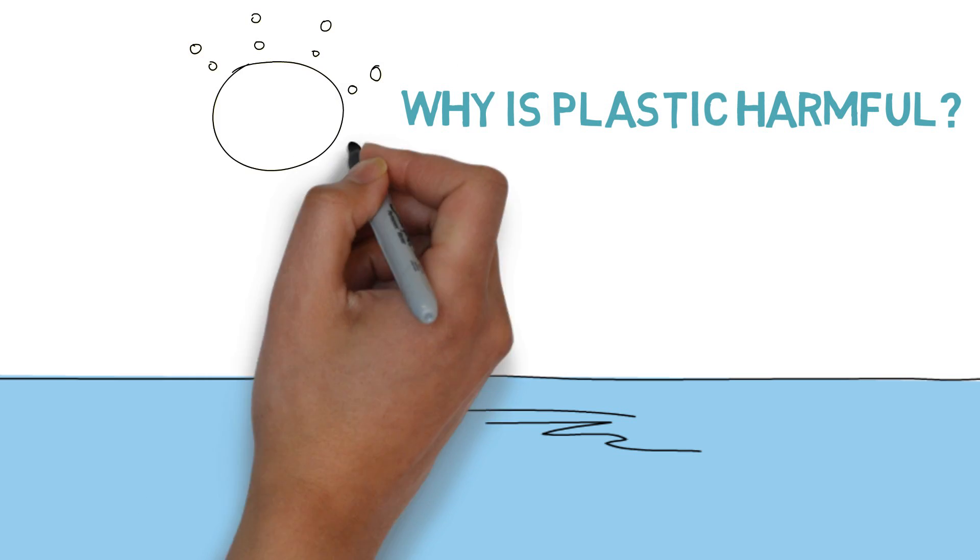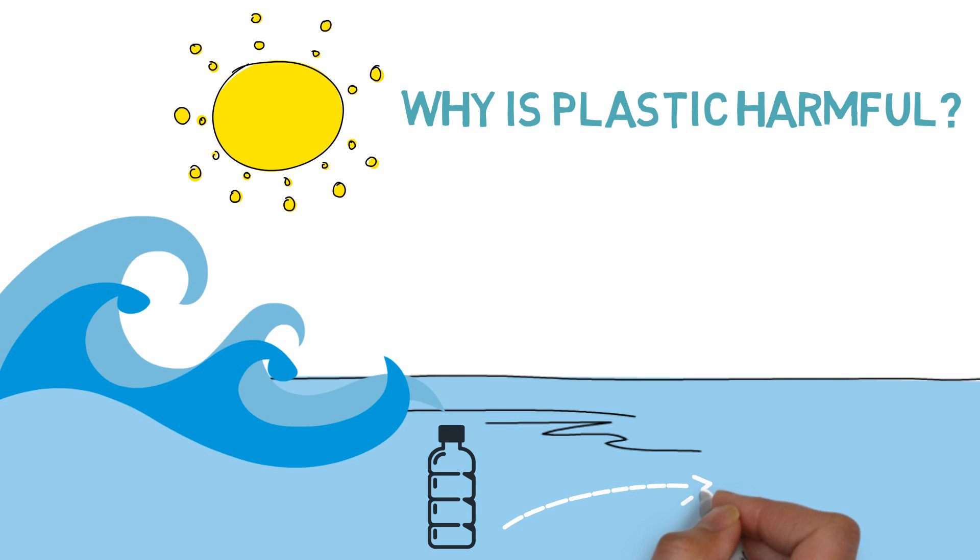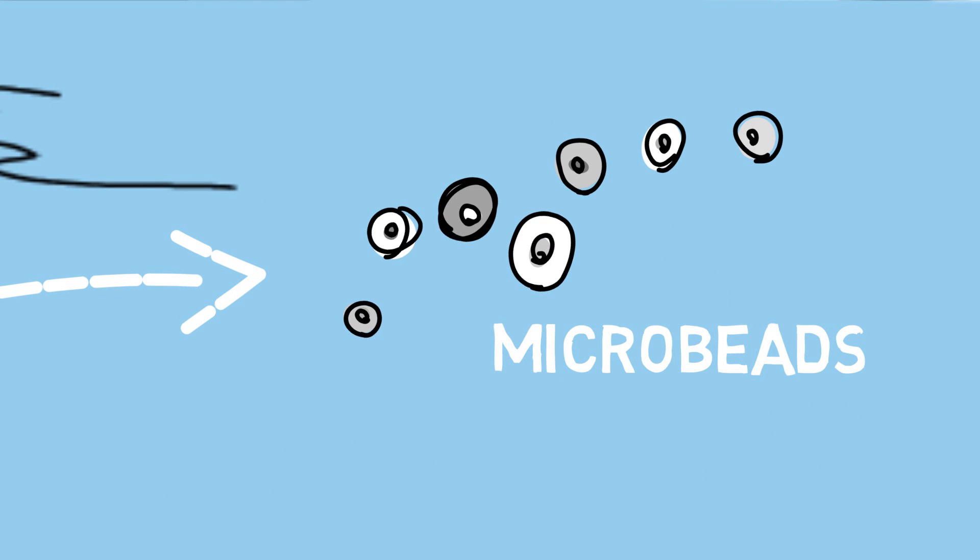Plastic pollution poisons the global supply of seafood. Through the sunlight and waves, some plastic in the ocean breaks into small pieces, less than 5 mm, called microbeads, which are very small and very toxic.